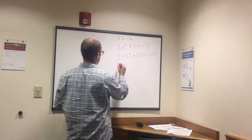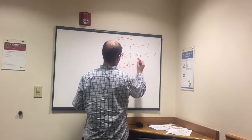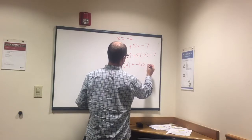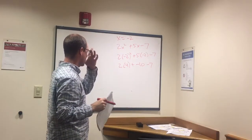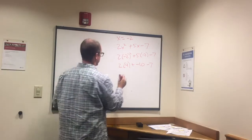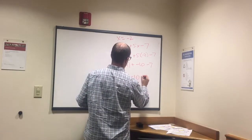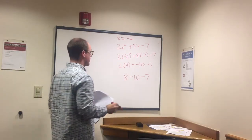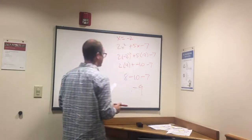Okay, so what does that leave us with? 2 times 4 plus 5 times negative 2 is negative 10 minus 7. Okay, what we're left with here, 2 times 4 is 8 minus 10 minus 7. So we've got 8 minus 10 is negative 2. Negative 2 minus 7 is negative 9.